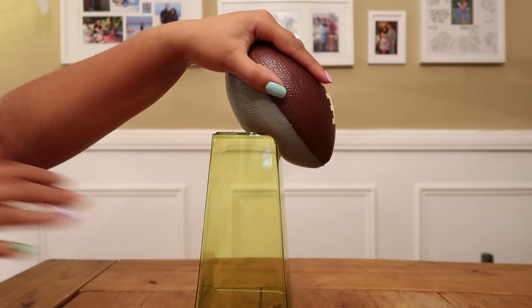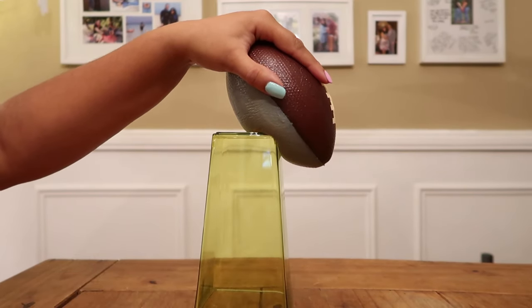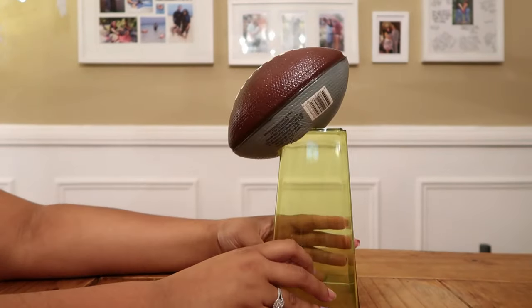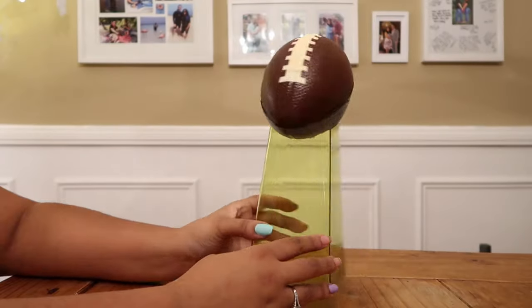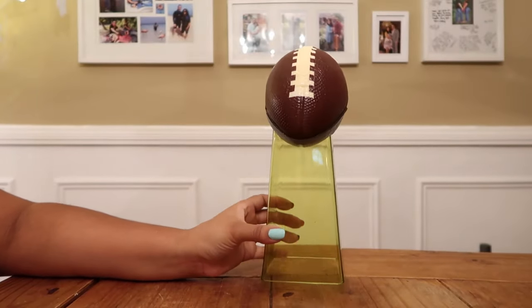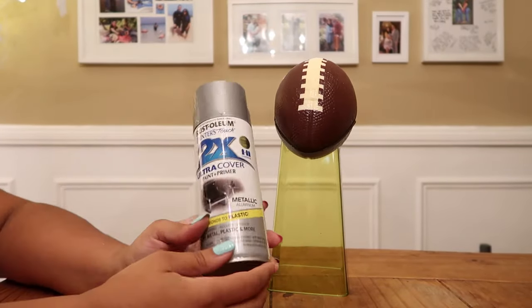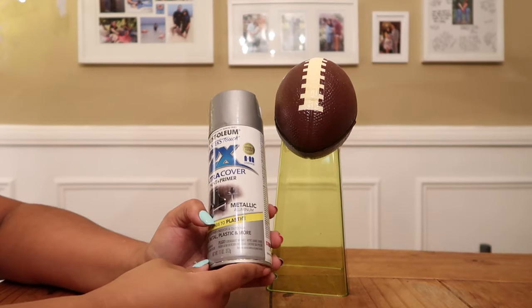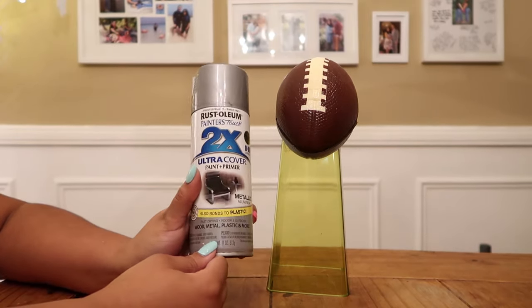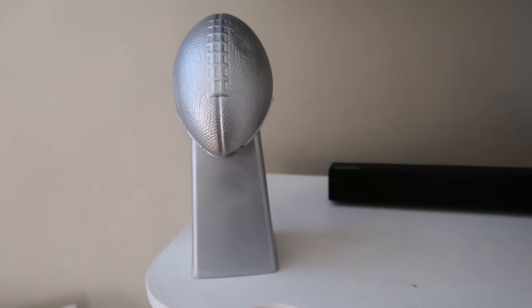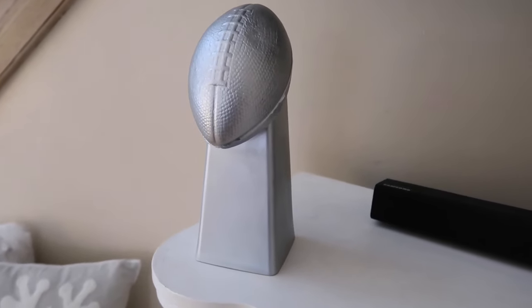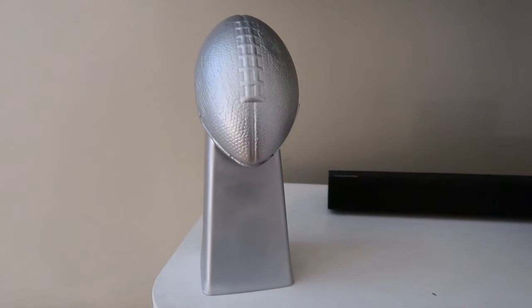Once your football is glued onto your vase, next we're going to go ahead and spray paint it. I'm going to be using Rust-Oleum in the color metallic aluminum. And here's how our DIY Lombardi trophy looks and it honestly cost less than five dollars to make, perfect for our football party.